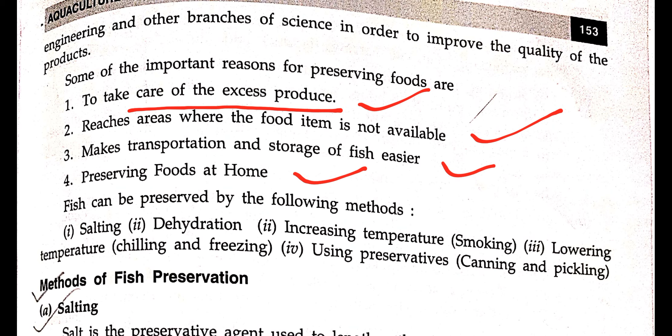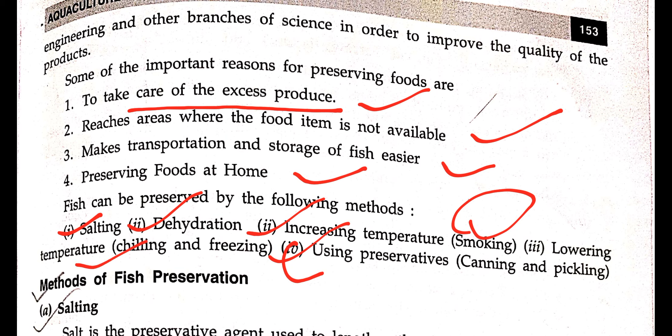Fish can be preserved by the following methods: salting, dehydration, increasing temperature, smoking, refrigeration, canning, and pickling.